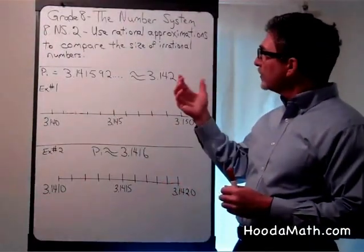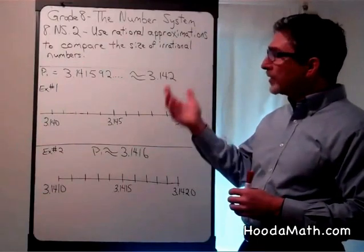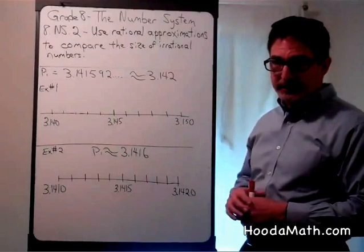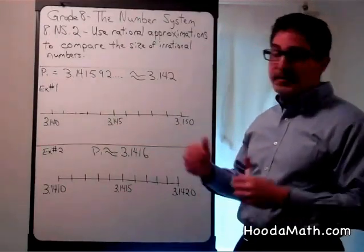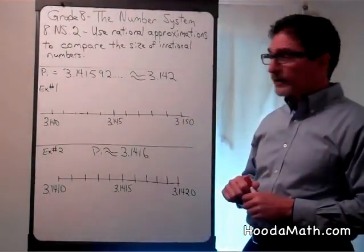In this lesson, we're going to use rational approximations to locate an irrational number on the number line. Pi is used commonly in mathematics. Where would we locate it on a number line?